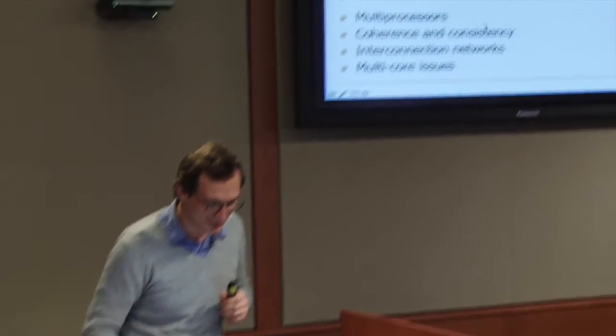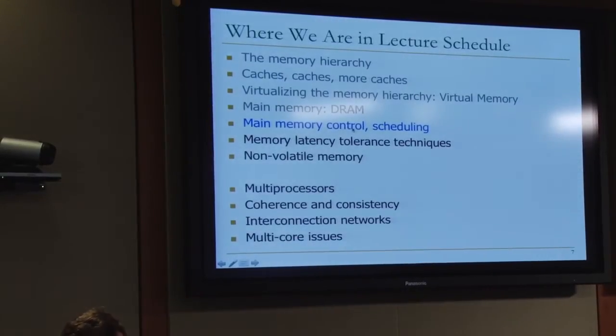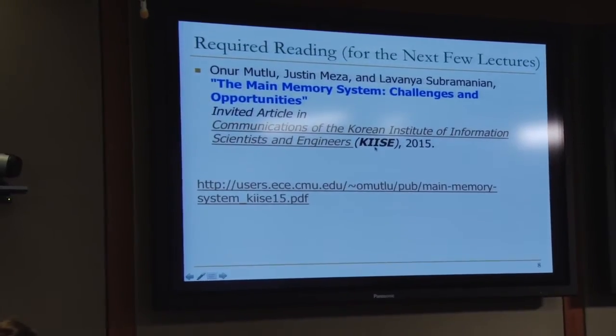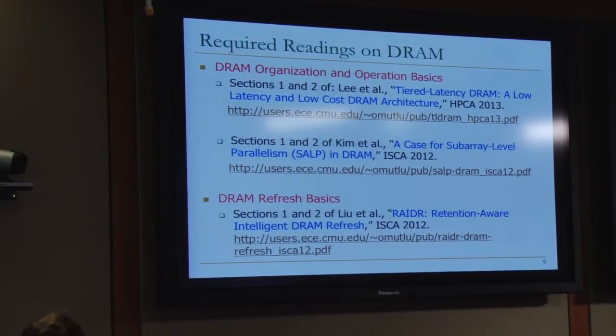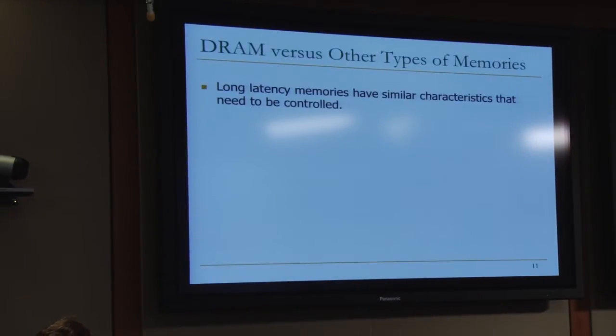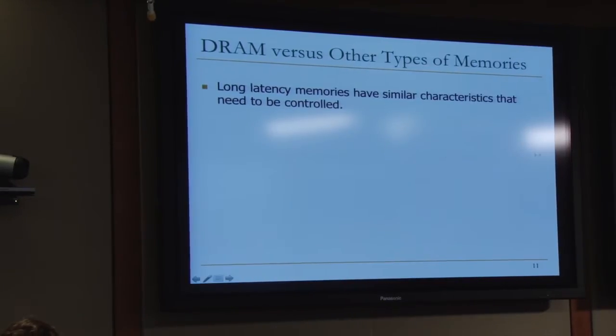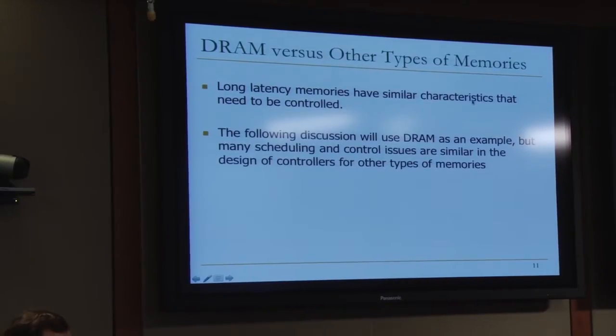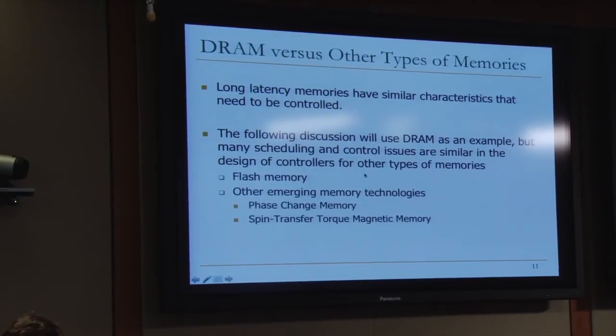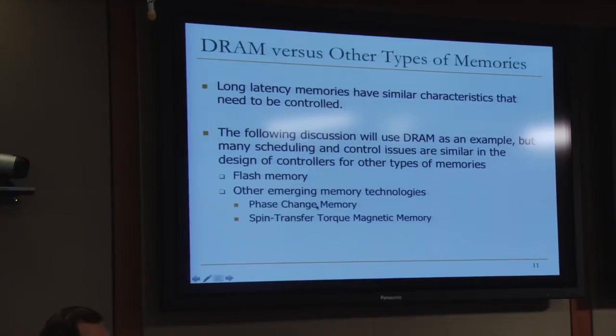This is where we are in the lecture schedule. We've covered main memory and DRAM, and we're going to talk about memory control and scheduling. These are the required readings, so hopefully you're doing them. Long latency memories have similar characteristics that need to be controlled. I'll use DRAM as an example, but there are other types of memories like flash memory and other emerging memory technologies — they all need memory controllers. SRAM needs memory controllers also — you have cache controllers in the processor. DRAM is a little more complicated, and flash memory is even more complicated as you go farther. Hard disk is even more complicated because it's a very different technology.